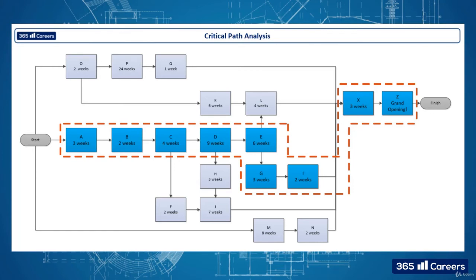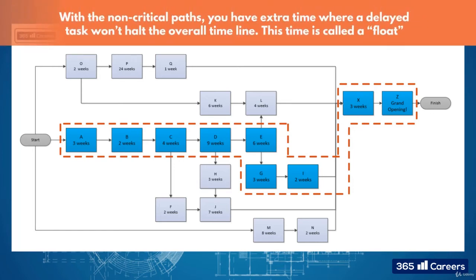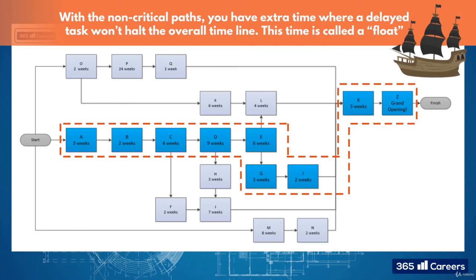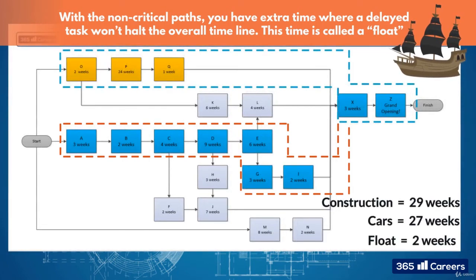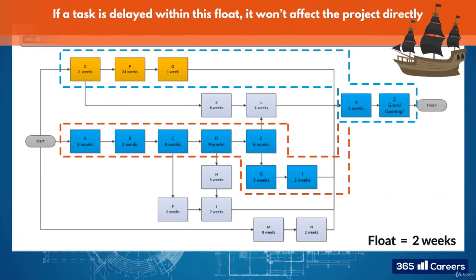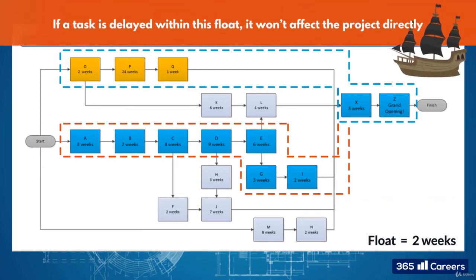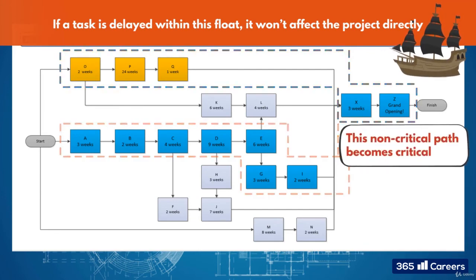With the non-critical paths, you have extra time where a delayed task won't halt the overall timeline, and this is called a float. As you can see, the car selection and production stream has a float of two weeks. Therefore, if a task is delayed within this float, it won't affect the project directly. However, if there is a delay longer than the float, then this non-critical path becomes the critical path.